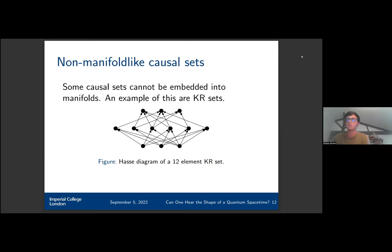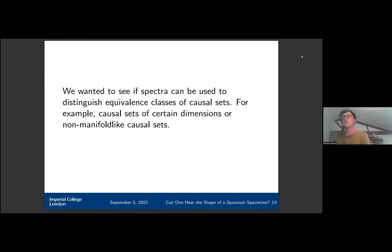These are important because we would want to suppress them if causal set theory would be a theory of quantum gravity. So what we wanted to see is if the spectra of operators of causal sets could be used to distinguish equivalent classes of causal sets, in particular causal sets of certain dimensions and also non-manifold-like causal sets.